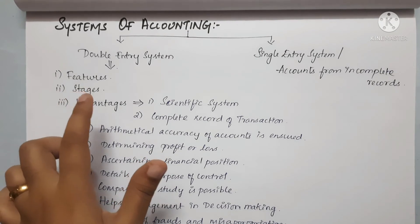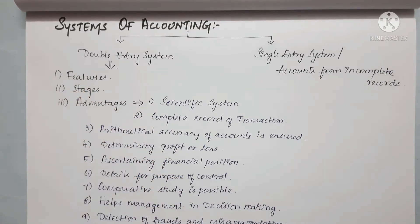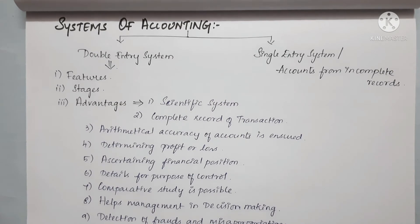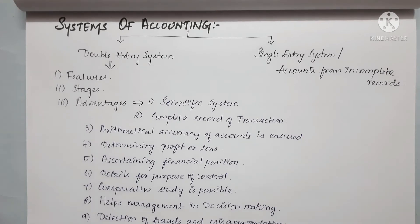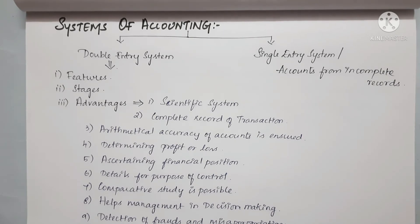The Double Entry System ensures complete records of each transaction. Every transaction has two aspects — one aspect of debit and one of credit. The stages are: recording, classifying, closing the books, and preparing the trial balance.